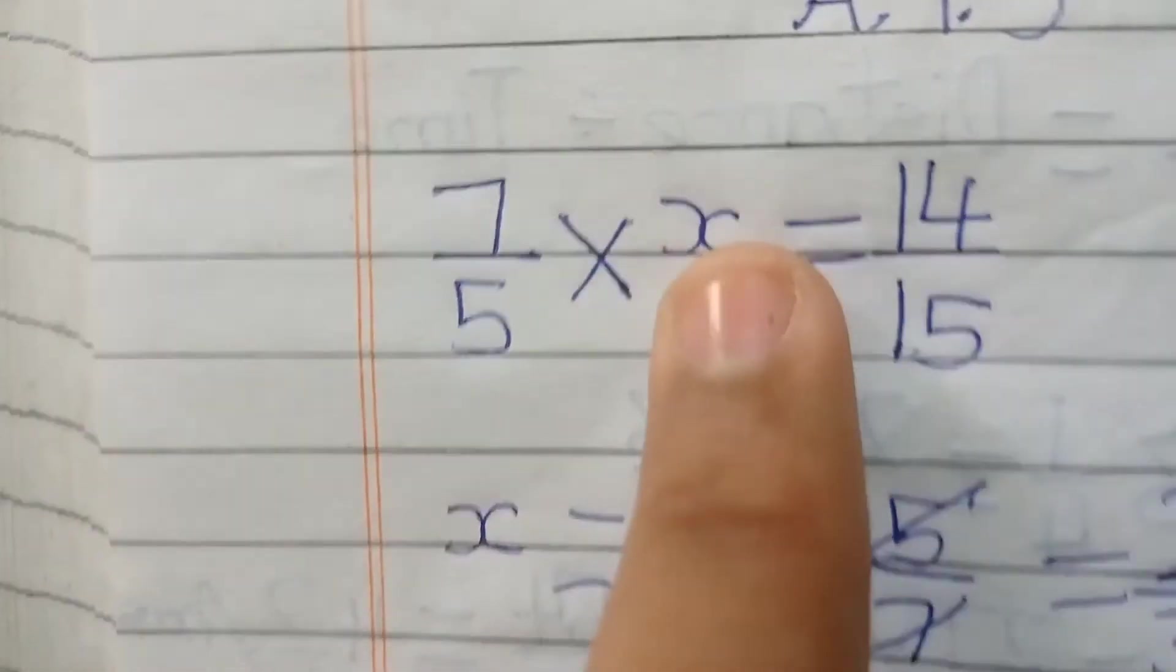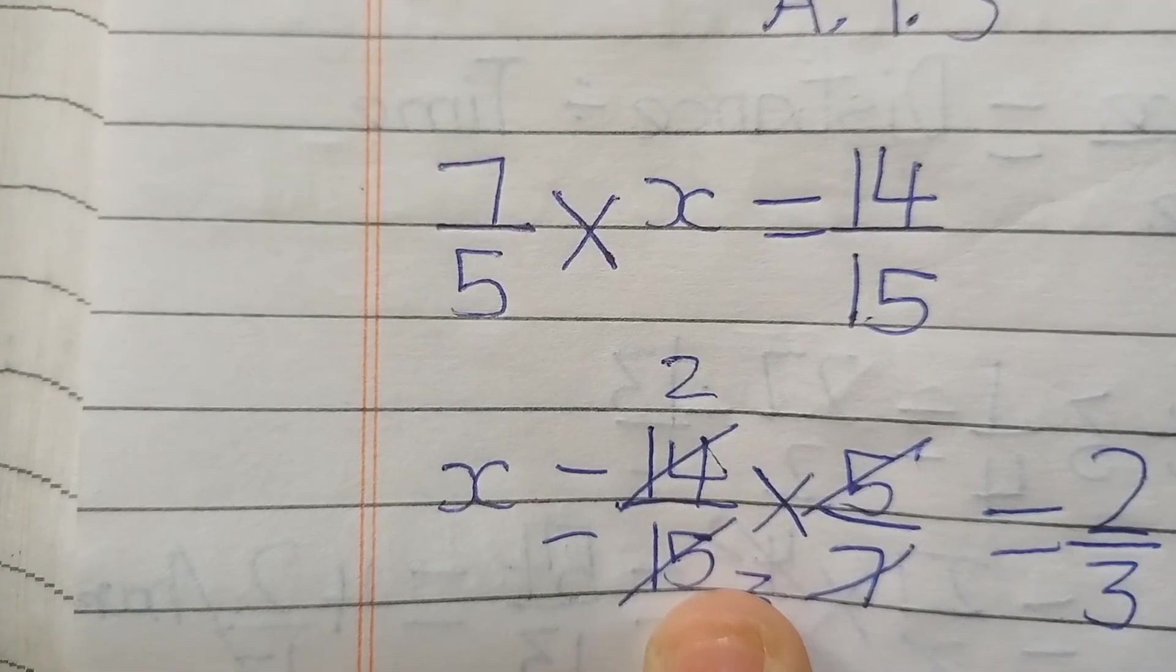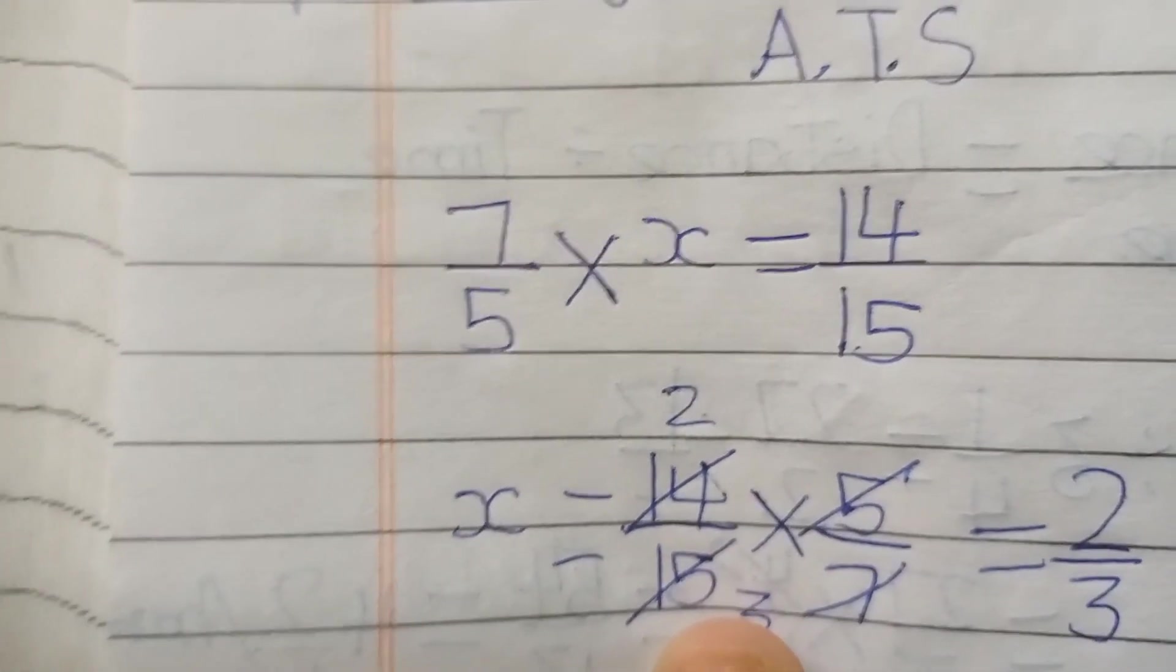So agar hum 7 over 5 ko 2 over 3 se multiply karenge, so hamara answer aayega 14 over 15. So aaj ki video ke liye itna hi. Main aap sabhi ko milungi next video mein. Is video ko poora dekhne ke liye thanks.